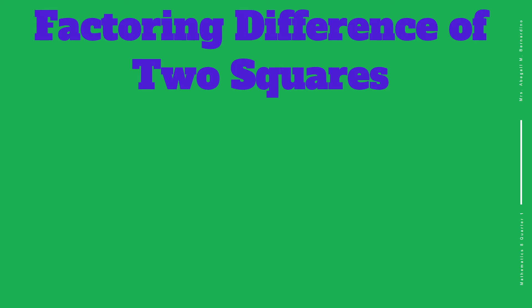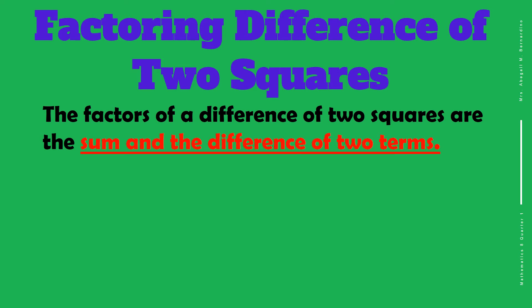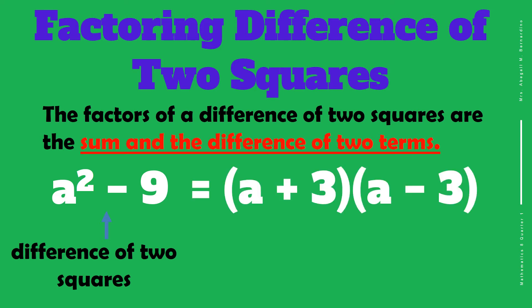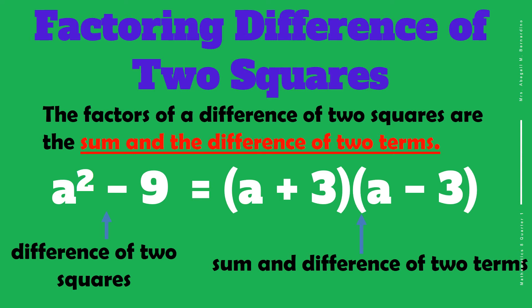Now we're going to use the drill in our lesson for today, which is all about factoring difference of two squares. The factors of a difference of two squares are the sum and the difference of two terms. For example, a squared minus 9 is the difference of two squares, and the answer is the quantity a plus 3 times the quantity a minus 3. The two terms are a and 3 — here is the sum and here is the difference.